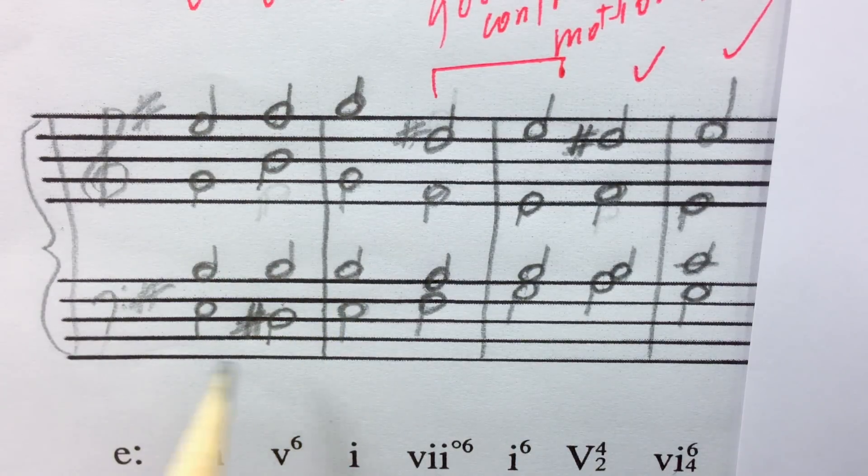1 chords and 5 chords share a common tone scale degree 5. So whenever you can, you should maintain it.